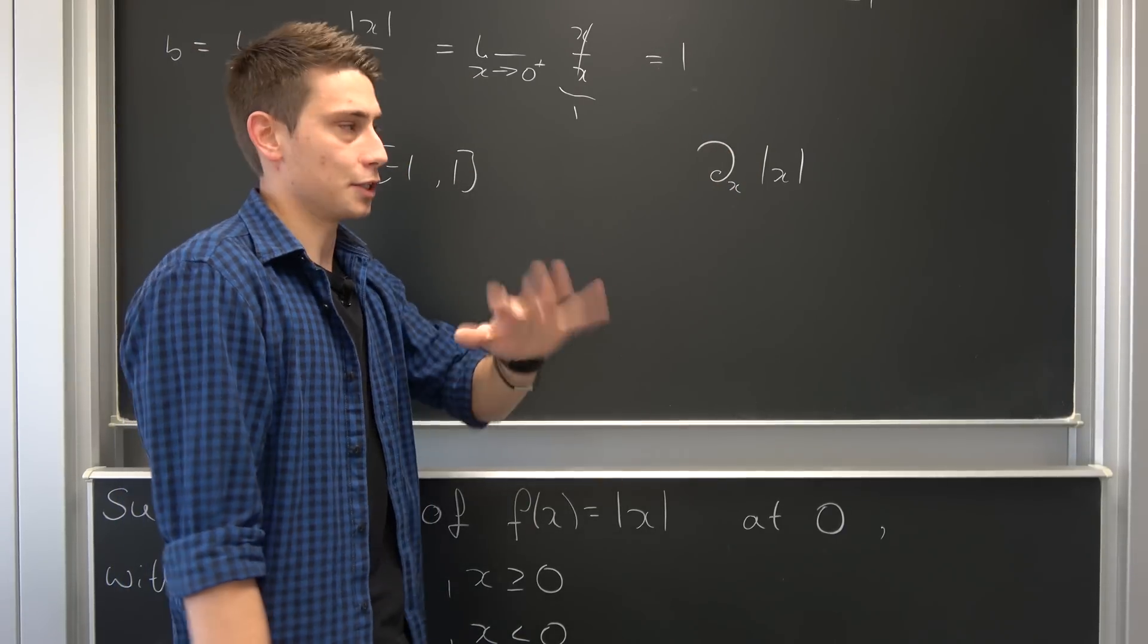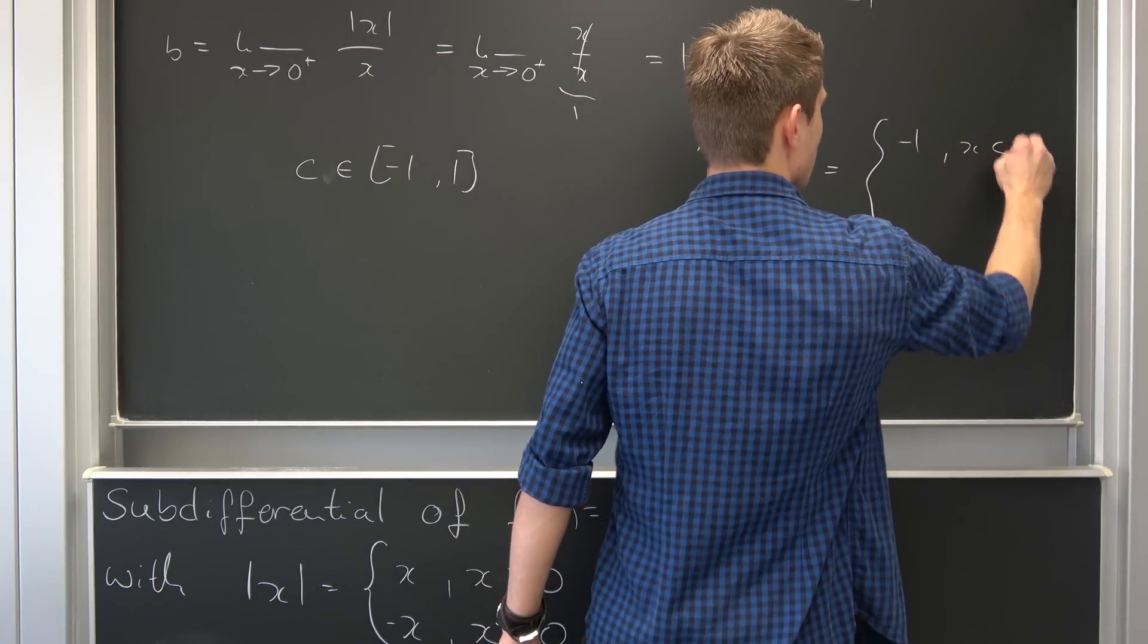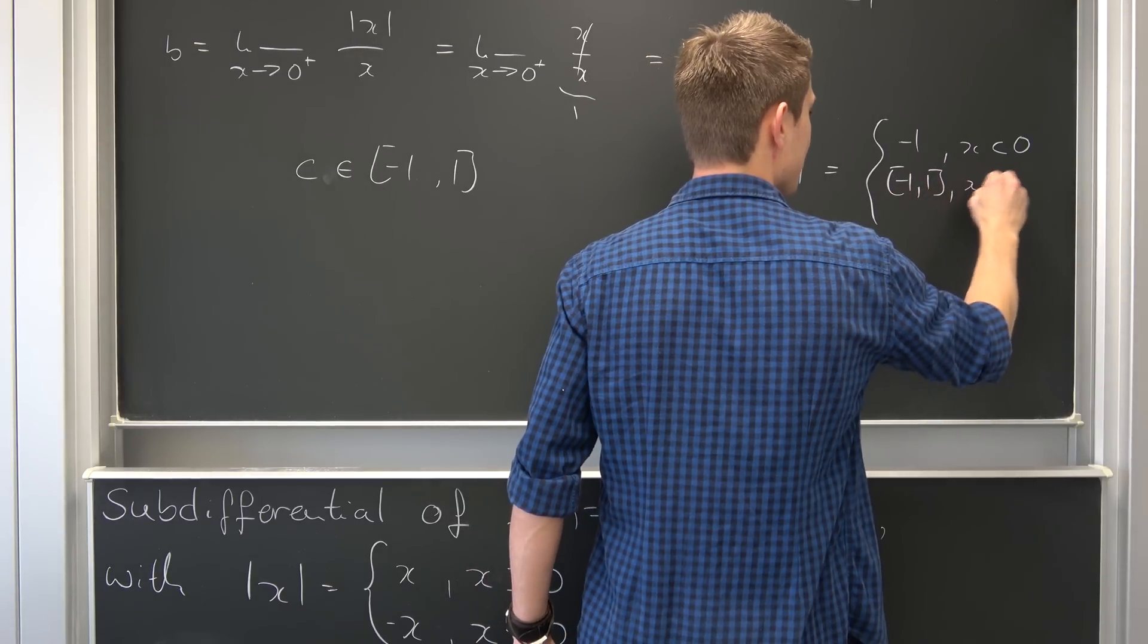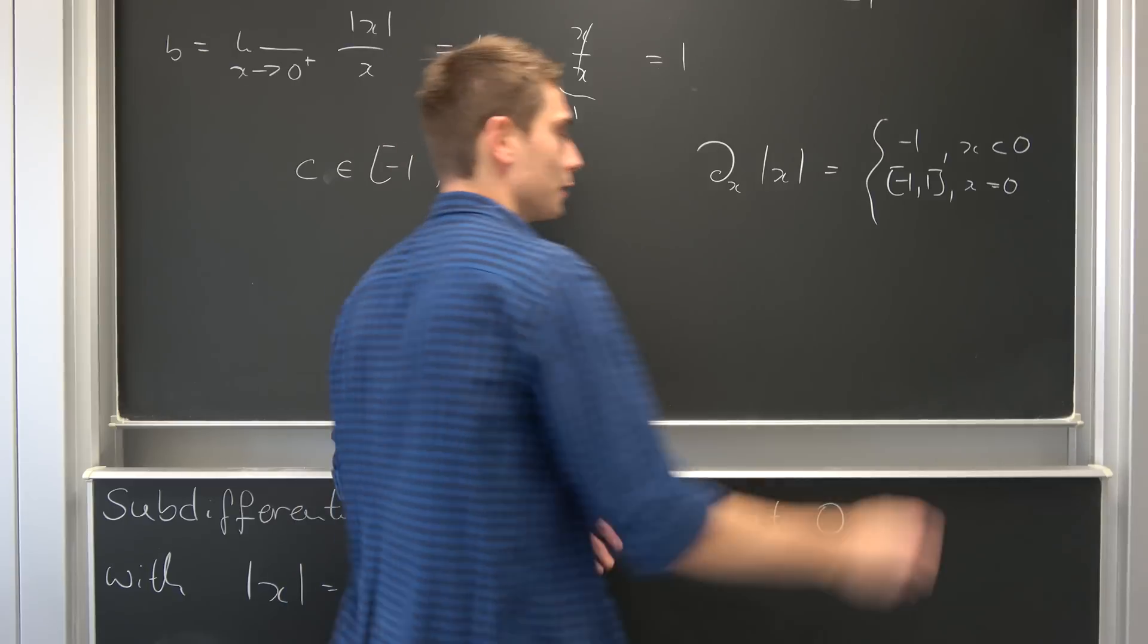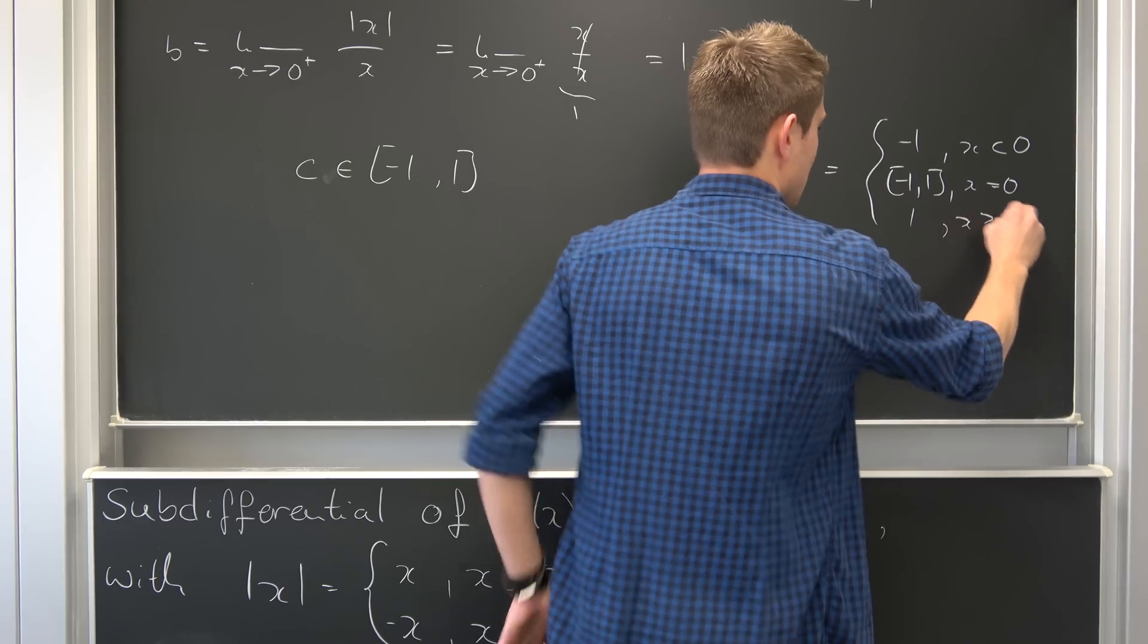The derivative is -1 if x is less than 0, we have this sub-derivative if x equals 0 or approaches zero from left and right, and we have +1 if x is strictly greater than 0. Those are all the derivatives.